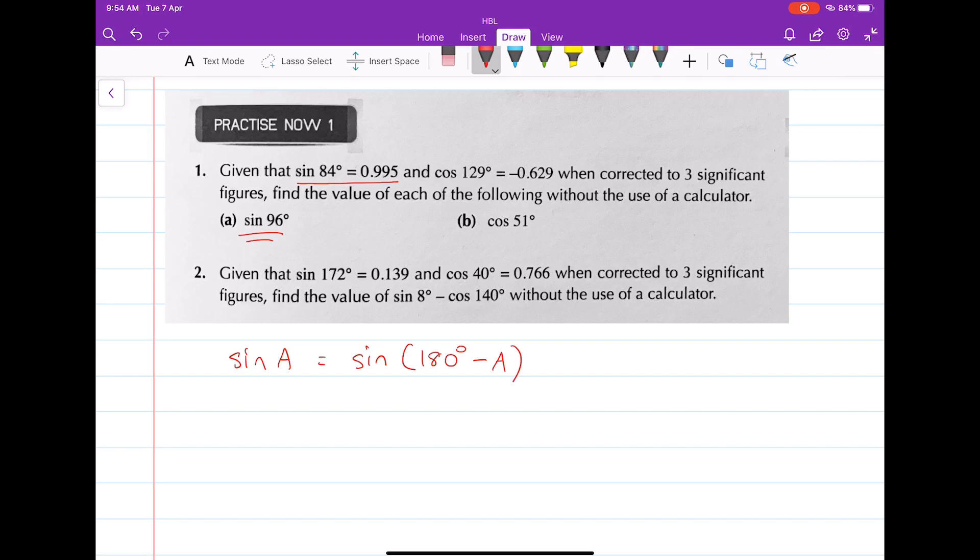So let's try to find sine 96 degrees. Now, this one will be equal to the sine of 180 degrees minus 96, which will give you sine 84 degrees, which is already available to you. And you can just state this as 0.995.